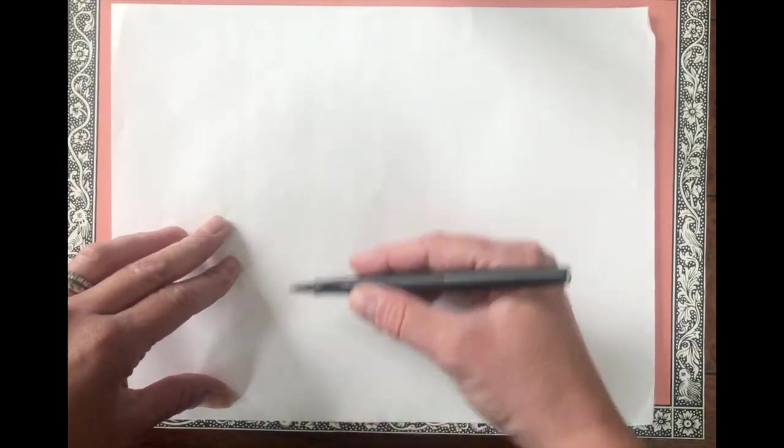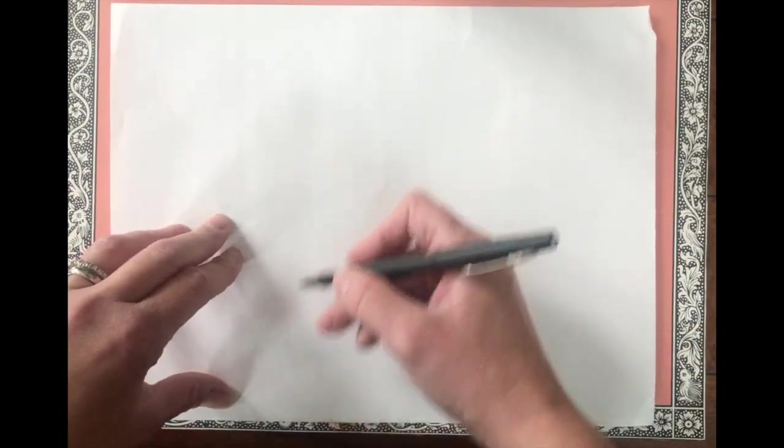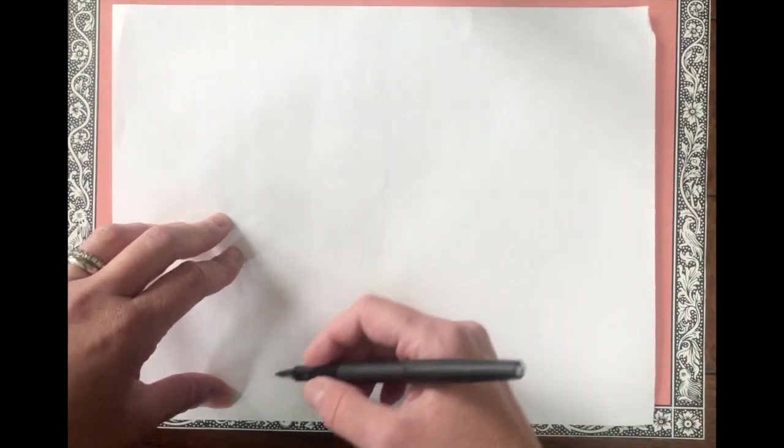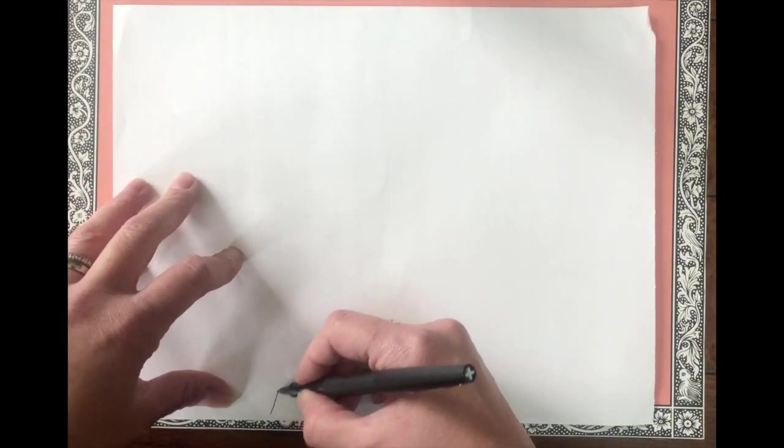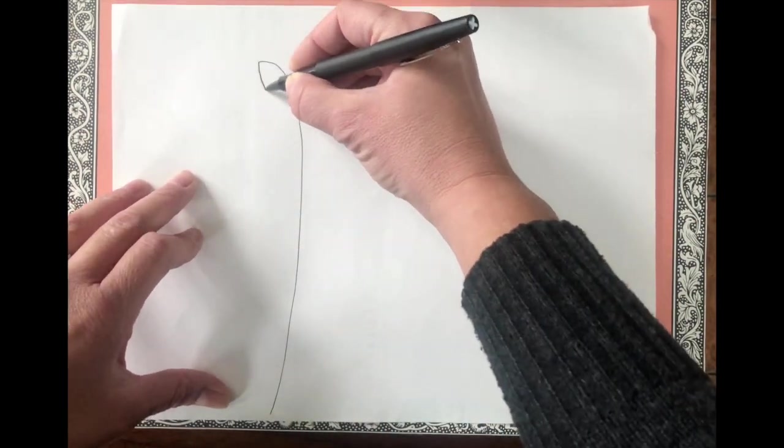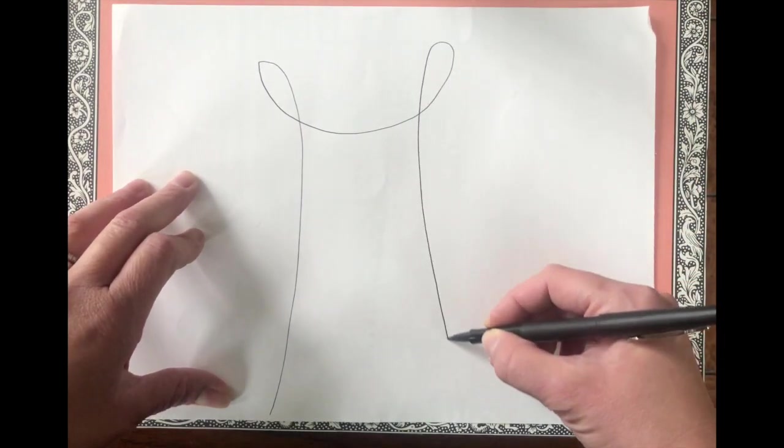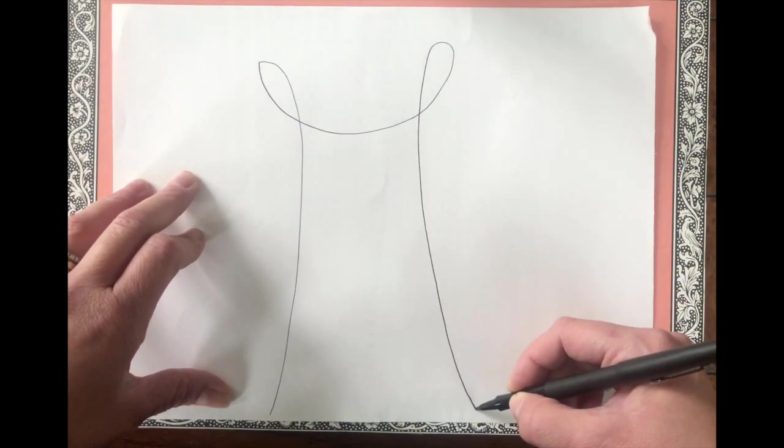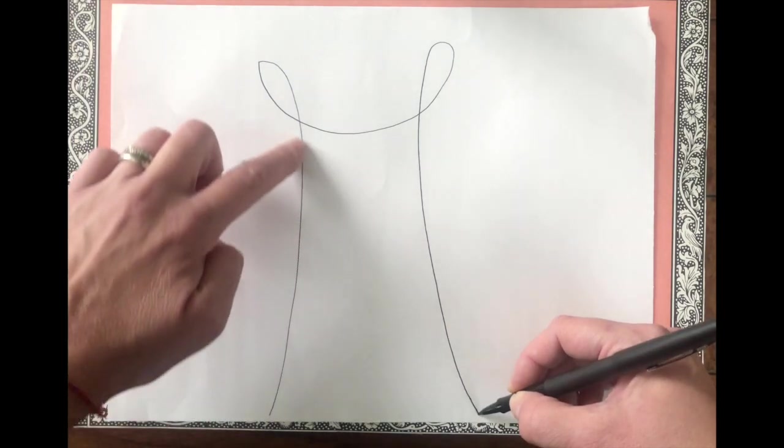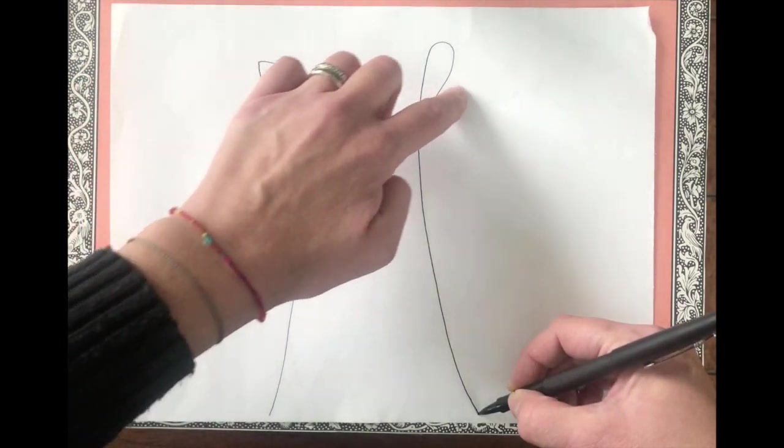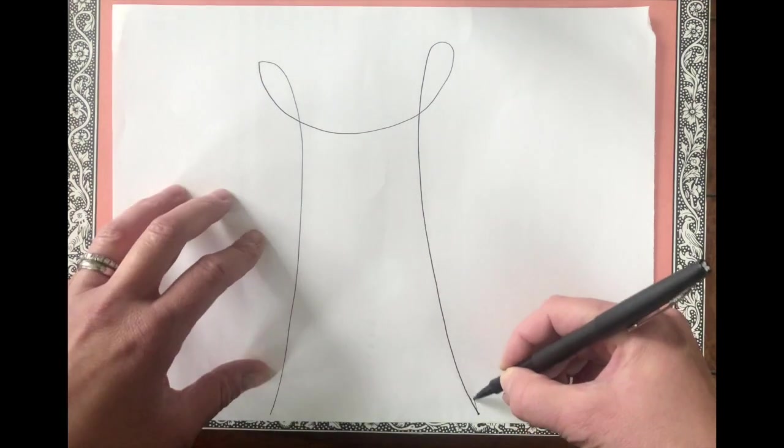All right. So remember, once your pencil goes down onto your paper, you can't pick it up. So you have to continue with that same line. And you could do a couple of these. Remember that it's meant to be kind of fun, free flowing and relaxing. So the first shape we're going to start with goes up, around, down, and we're going to go back up.